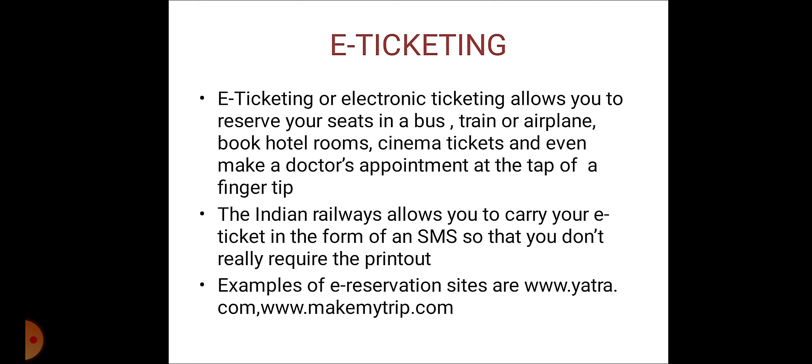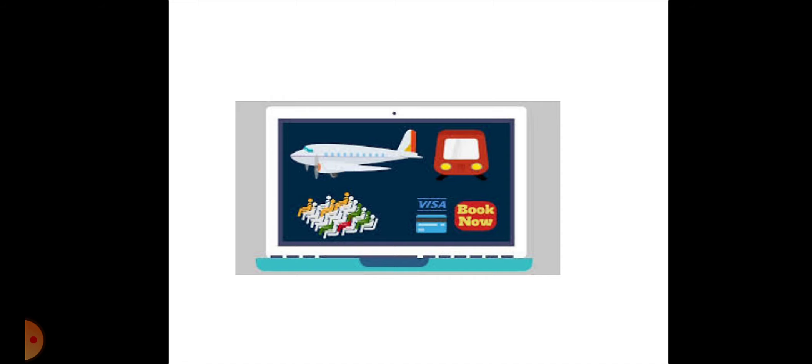The Indian Railways allows you to carry your e-ticket in the form of an SMS so that you don't really require the printout. Examples of e-reservation sites are www.yatra.com, www.makemytrip.com, etc. Smartphones provide an easy way to purchase tickets of an airline, railway or even a movie. Customers can order, pay for and get their tickets using smartphones. This is called mobile ticketing. This reduces the production and distribution cost as well as the paperwork time. Tickets are usually delivered through a text message.